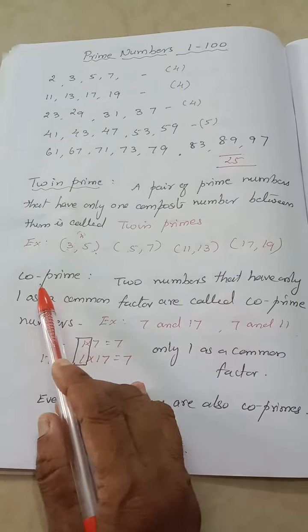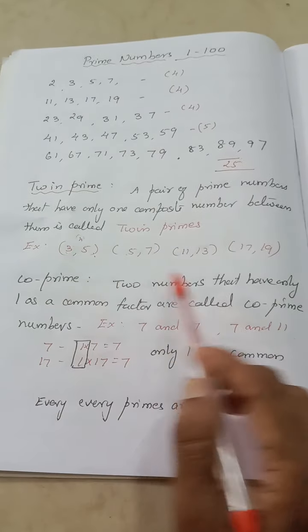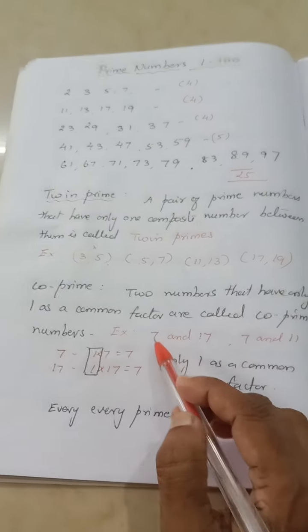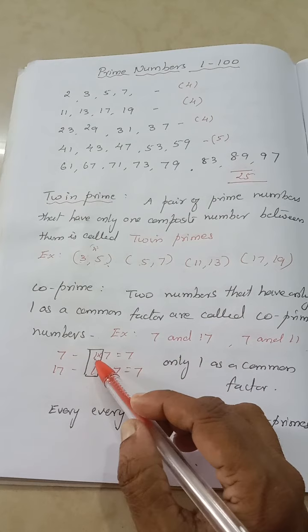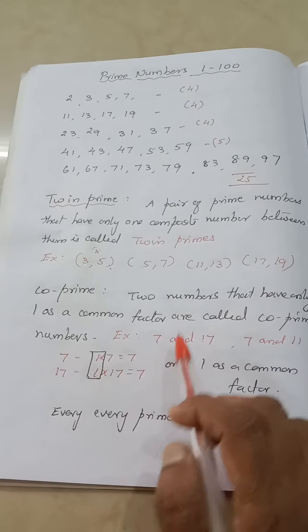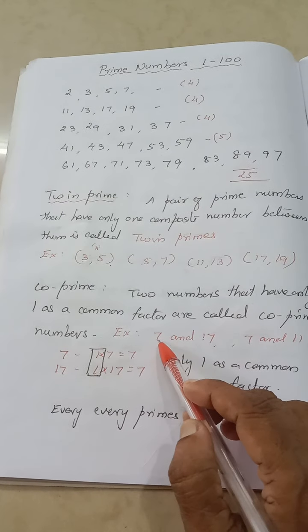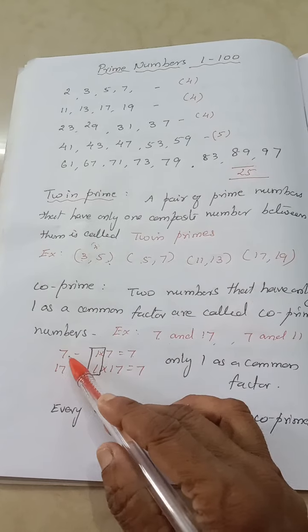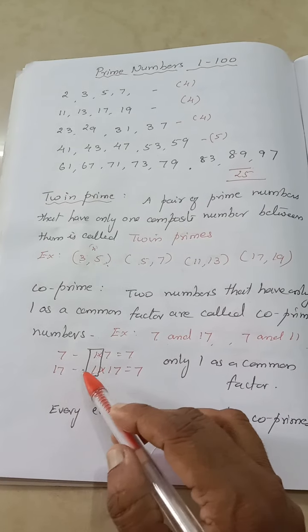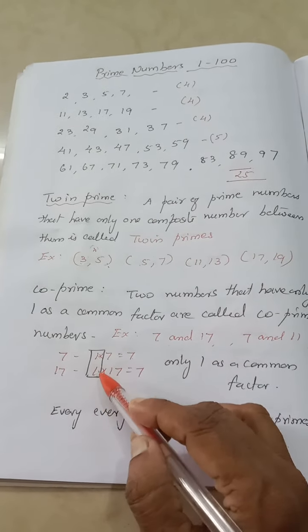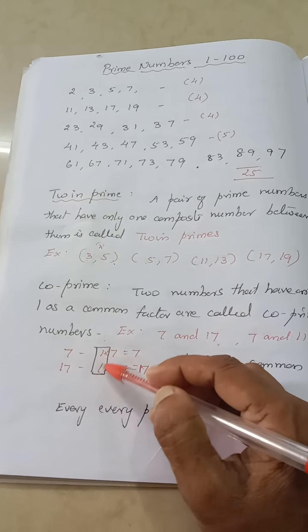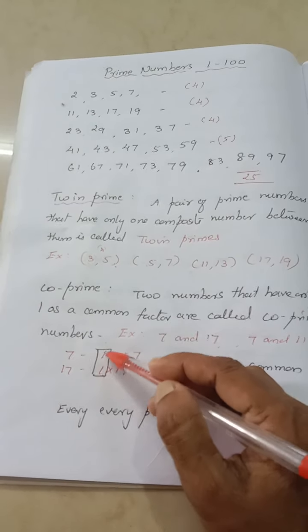Next let us see what is meant by co-prime numbers. Co-prime numbers are two numbers that have only 1 as a common factor. When we do factorization, if we get only 1 as a common factor, it is called co-prime. For example, 7 and 17 — the factors of 7 are 1 and 7. 17 is a prime number, so its factors are 1 and 17.